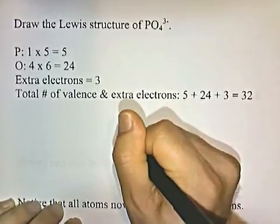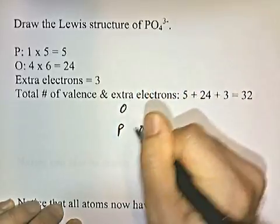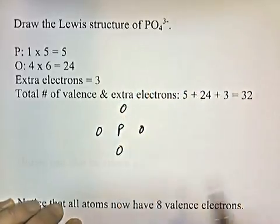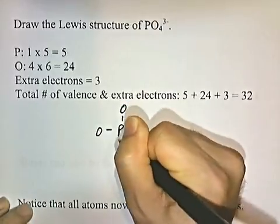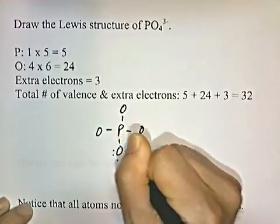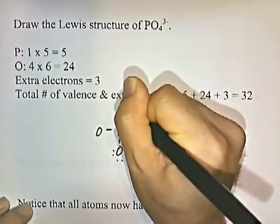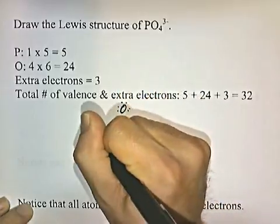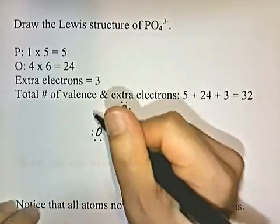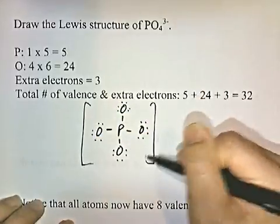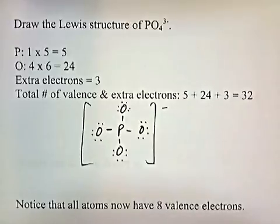We draw the central atom and surround it by the terminal atoms. Then we distribute all 32 electrons — 2, 4, 6, 8, 10, 12, 14, 16, 18, 20, 22, 24, 26, 28, 30, 32 — distributing all 32 electrons. We put a box around it and show the negative charge. Notice that all the atoms now have 8 valence electrons around them.